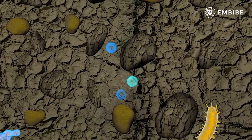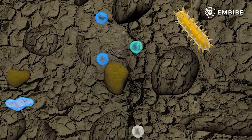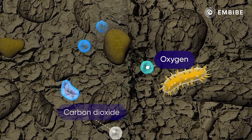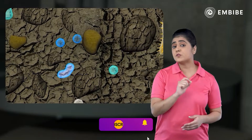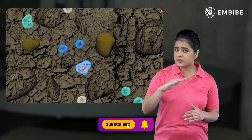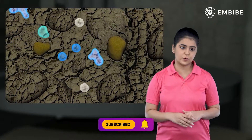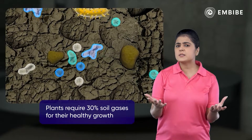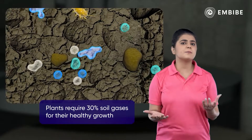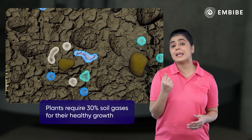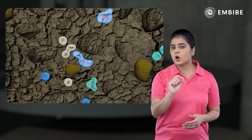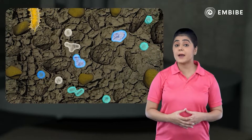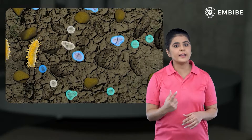Another important constituent of soil are gases such as oxygen and carbon dioxide. The amount of oxygen is found to decrease as we go deeper into the soil. Plants require a soil which has about 30 percent soil gases for their healthy growth.